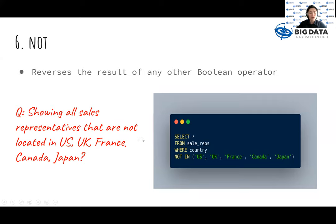Finally, we have NOT, which reverses the result of any other Boolean operator. Here in the example, by adding NOT in front of the IN operator, we can exclude the sales representatives who are located in those five countries and show the rest of the data.